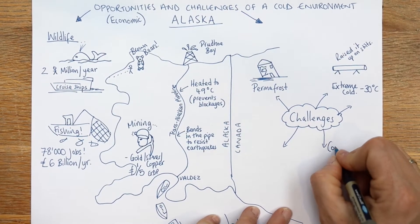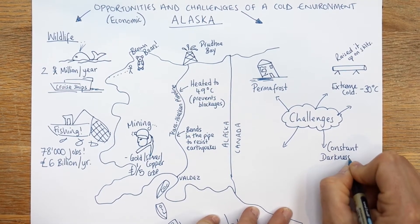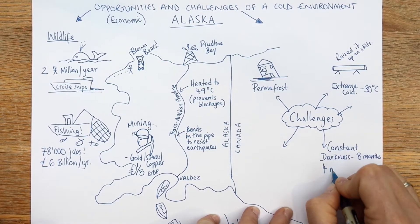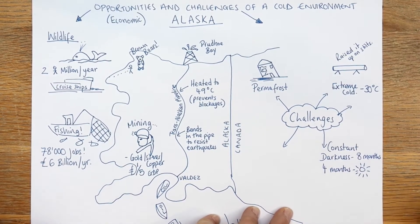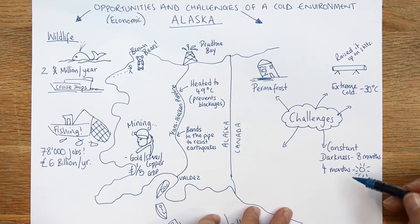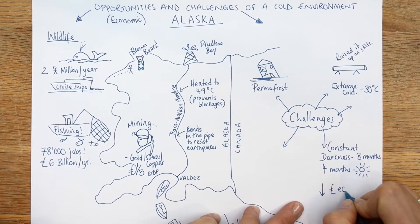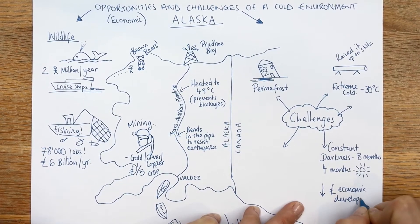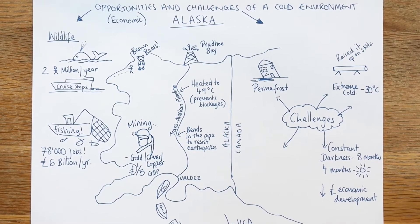Another challenge is constant darkness. For eight months of the year it's pitch black, and then for four months it's constant sunshine. The four months of light is fine - development can occur really well in that time. But the darkness leads to less economic development for obvious reasons: having to light everything you're doing and the health and safety issues and risks associated with working in the dark.